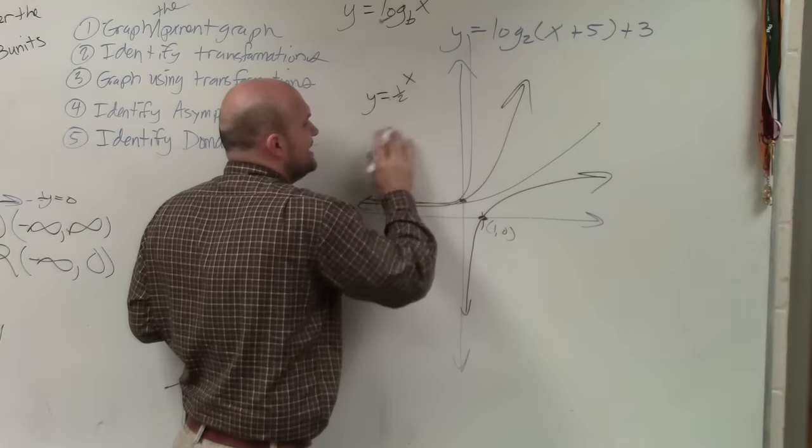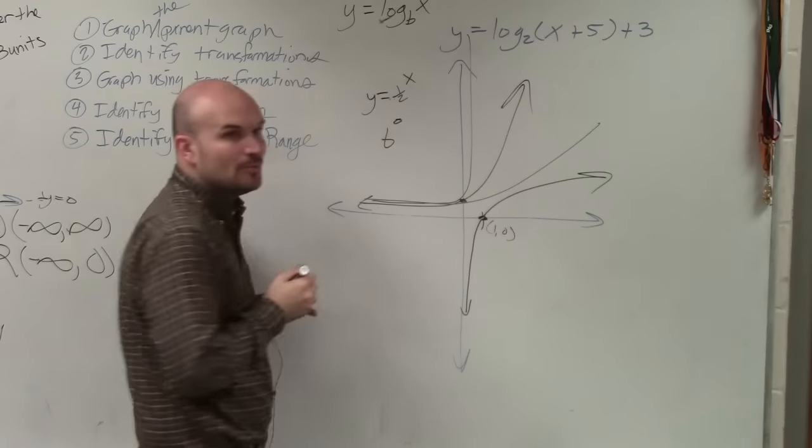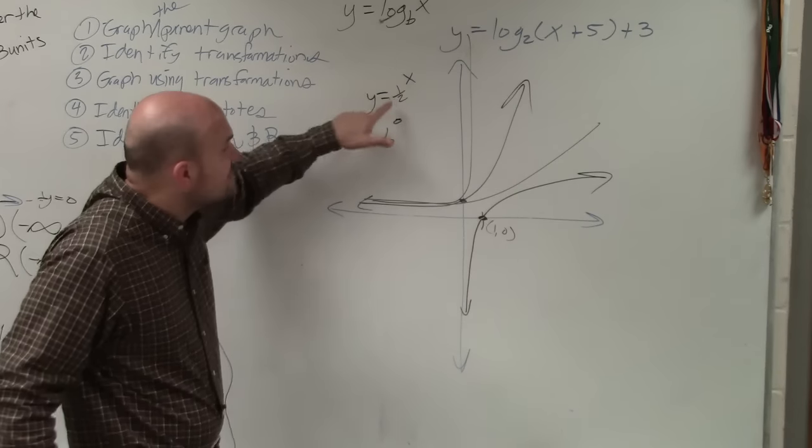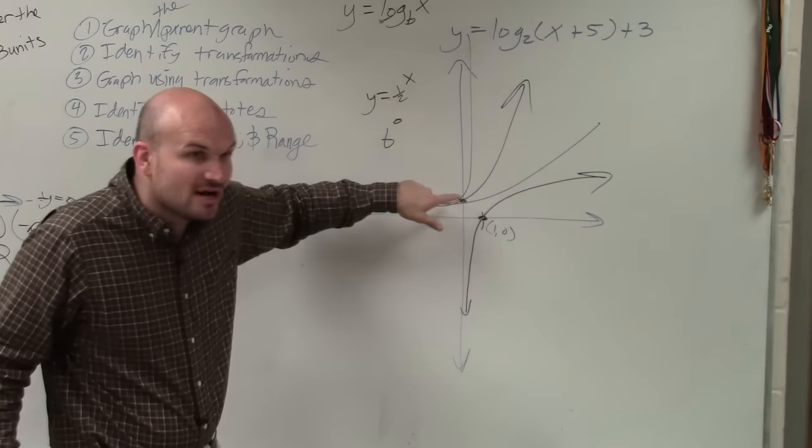Why? Because what is any number raised to the 0 power? 1. So it doesn't matter what b is. It's always going to cross at 1.